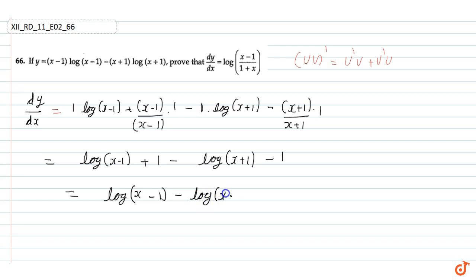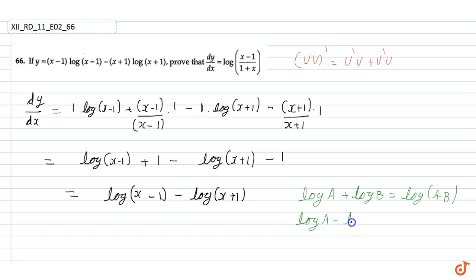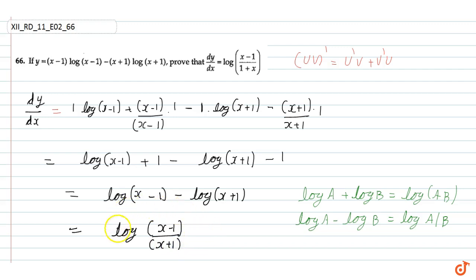अब हमें यह भी पता है कि log a plus log b, यह log(a into b) के equal होता है। And similarly, जो अगर sign minus होता है log a और b में — log a minus log b — तो यह log(a by b) होता है। So, this is equal to log of (x minus 1) upon (x plus 1). So, this is our differentiation and we have to prove the same. Hence proved.